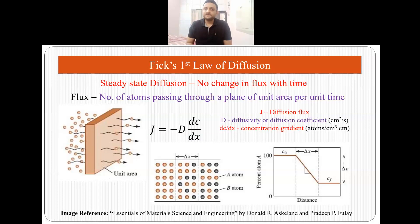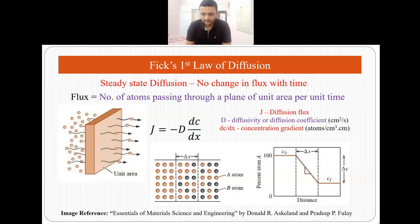Fick's first law of diffusion states that the diffusion flux J equals minus D times dC/dx, where D is diffusivity or diffusion coefficient, which is constant for every material, and dC/dx is the concentration gradient.